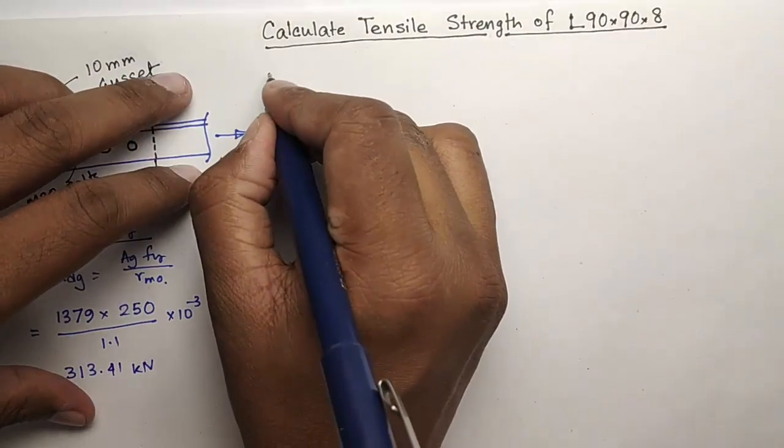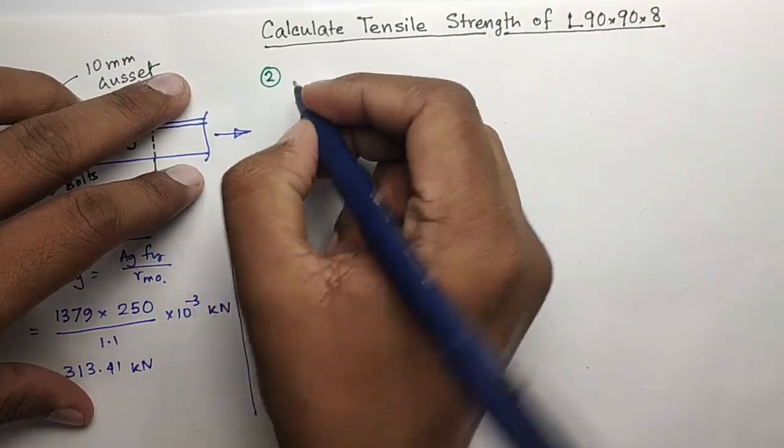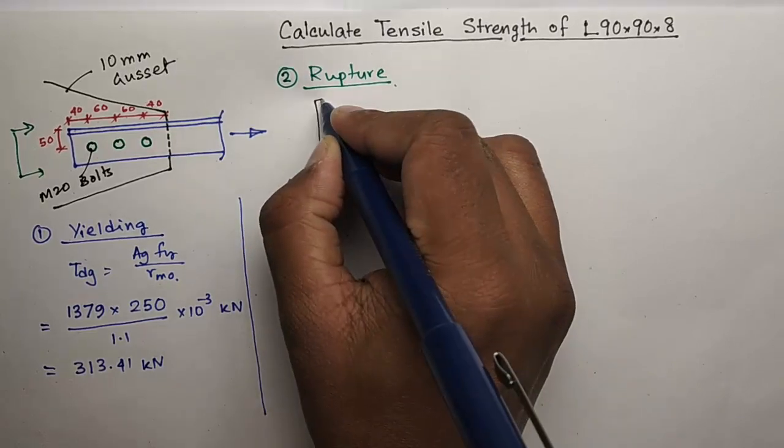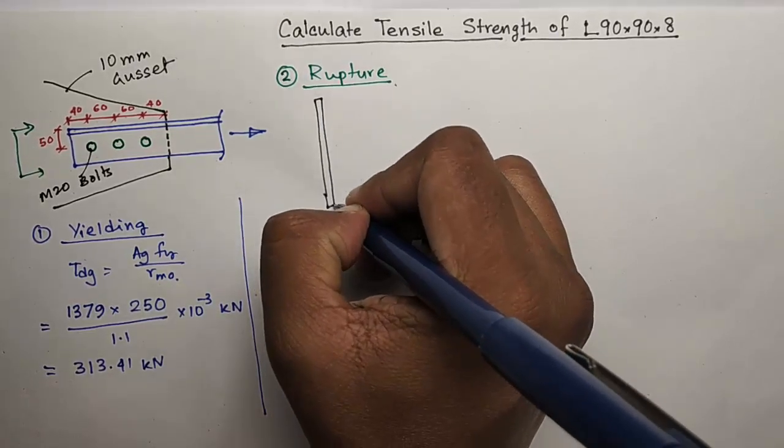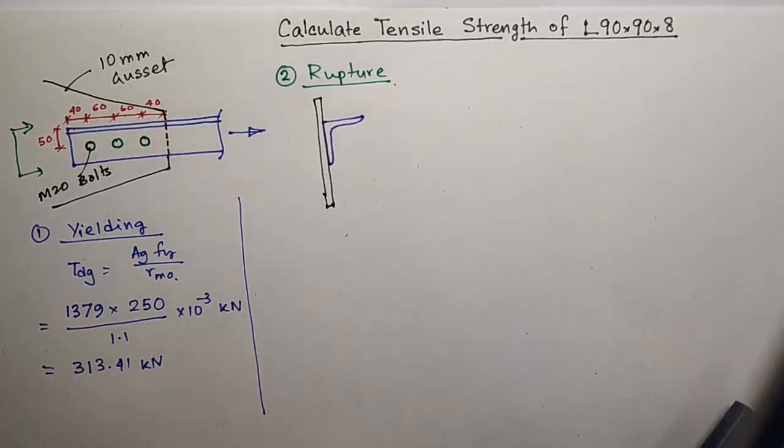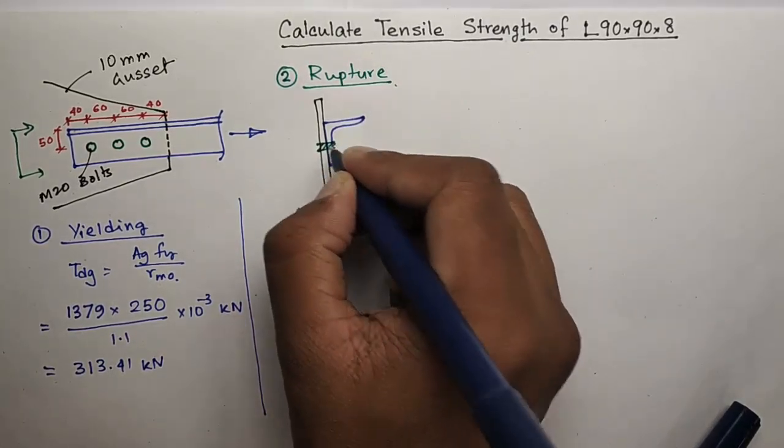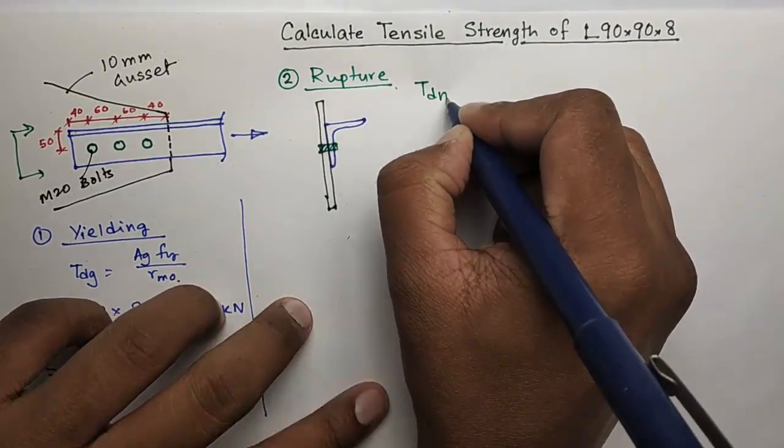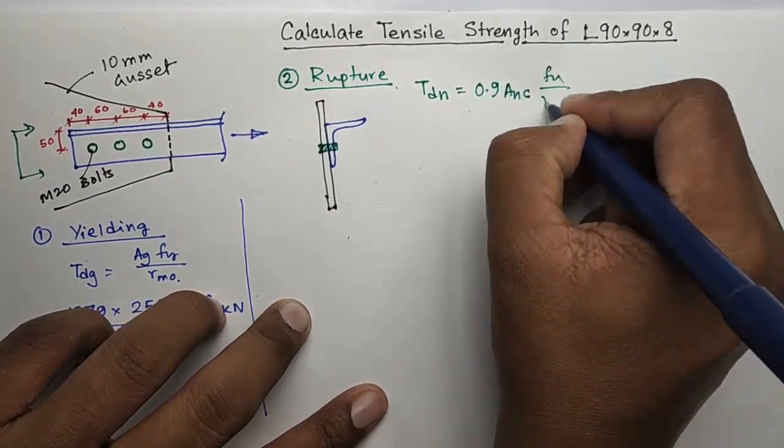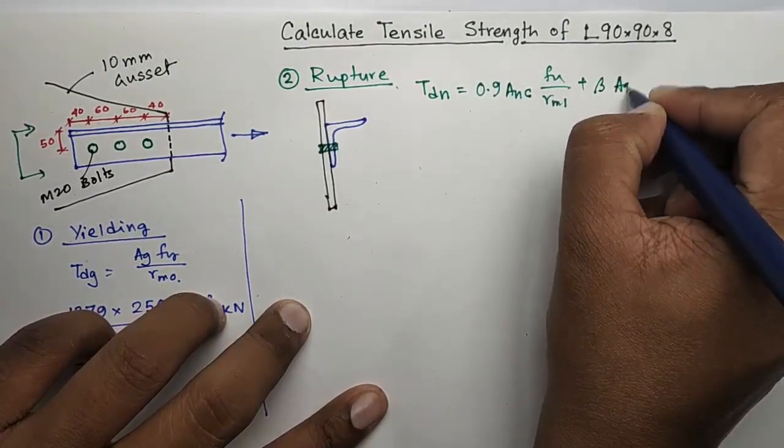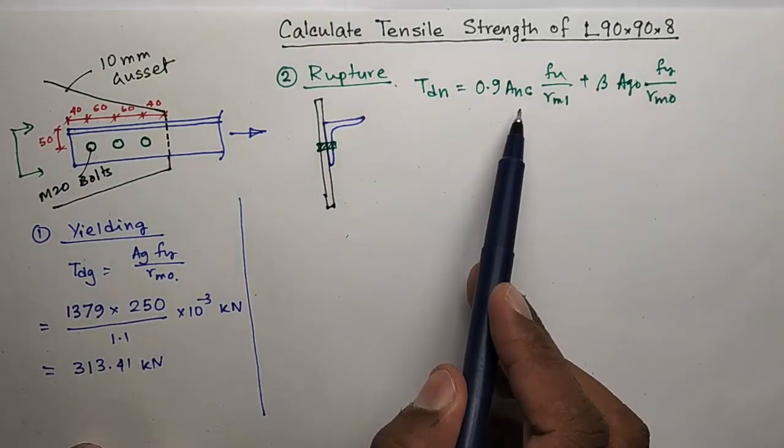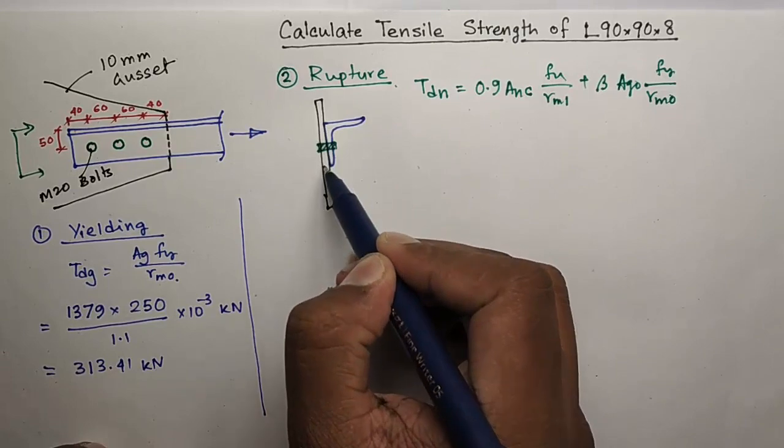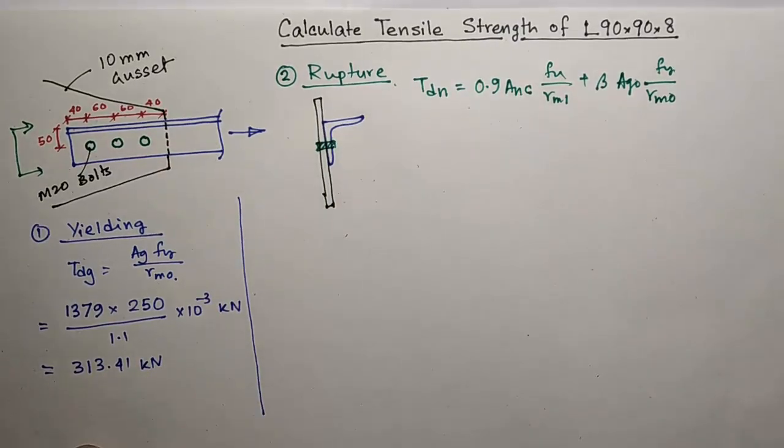Now coming to point number 2, which is design strength due to rupture. If you see this cross section, this is the gusset, this is the angle L90x90x8, connected by M20 bolts. The formula of rupture for single angle: ANC is the net area of the connected leg. Connected leg means this leg, and this is the outstanding leg.